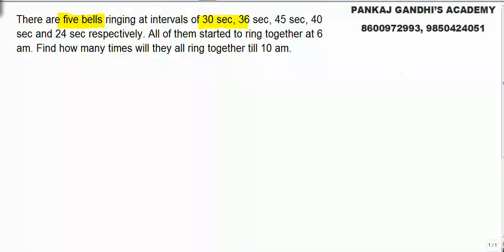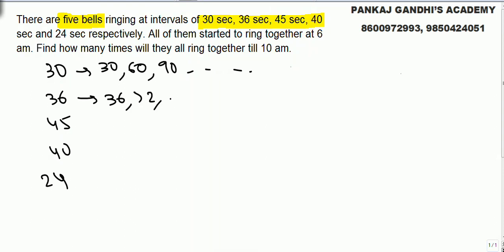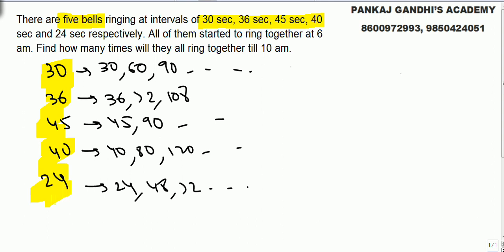Five bells ringing at intervals of 30, 36, 45, 40, and 24 seconds. Look, this bell will ring after 30, 60, 90 going on. This will ring after 36, 72, 108. This will ring after 45, 90 going on. This will ring after 40, 80, 120 going on. This will ring after 24, 48, 72. Look, we want all the bells to ring after...